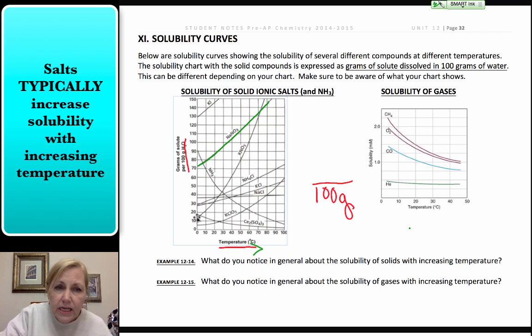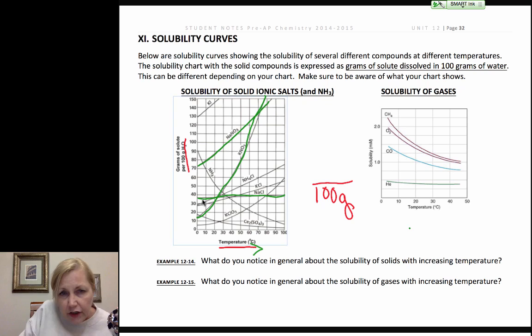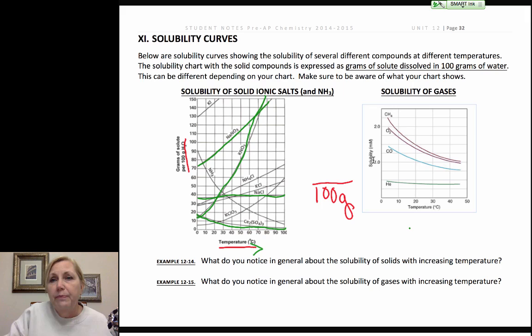I mean, look at potassium nitrate. It shoots way up. It's highly soluble in water. If we look at sodium chloride, table salt, it doesn't change very much. It goes up from about 37 grams per 100 grams to 40 grams per 100 grams. Not very much. If you look here, you see that we even have one salt that decreases its solubility in water as temperature increases. That's rather unusual.